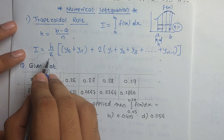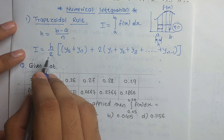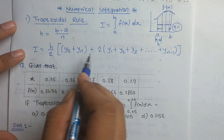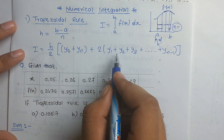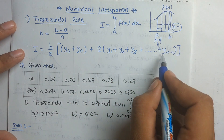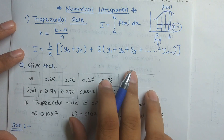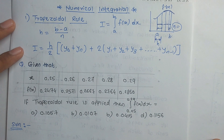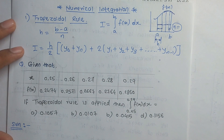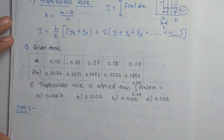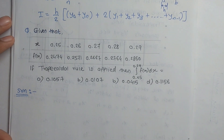From this we derive the formula: I equals h/2 times [(y₀ + yₙ) + 2(y₁ + y₂ + y₃ + ... + yₙ₋₁)]. This is the formula for finding the trapezoidal rule integration. Now we solve an example that will clear all your doubts related to the trapezoidal rule.